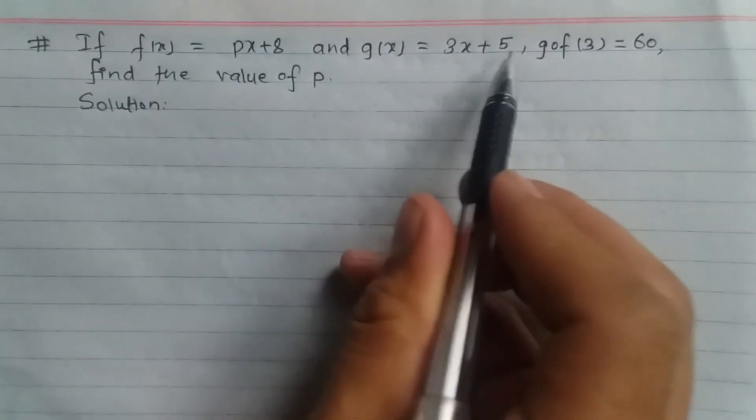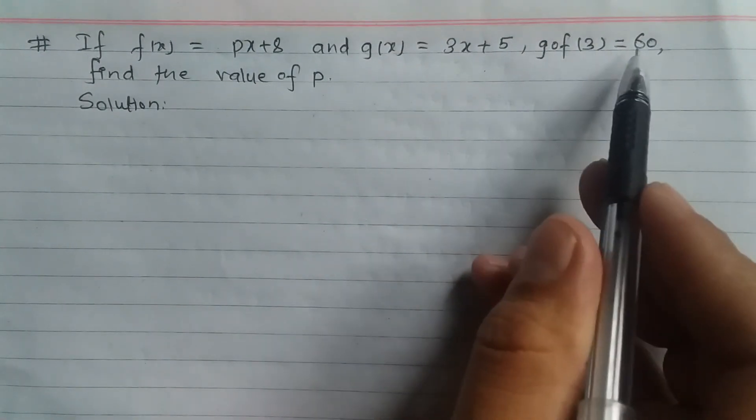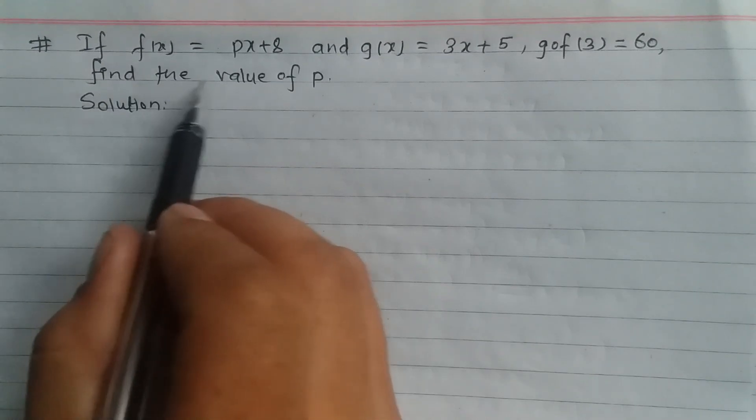If f(x) = px + 8 and g(x) = 3x + 5, g composite f(3) = 60, find the value of p.